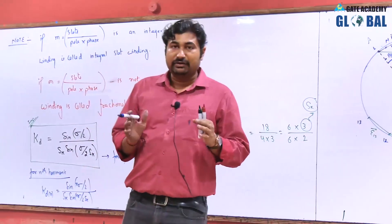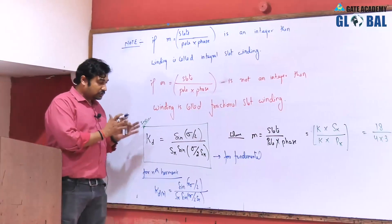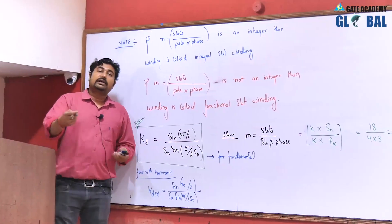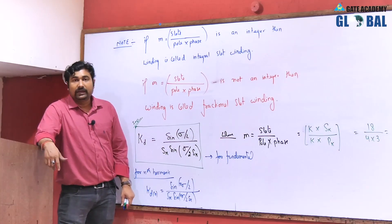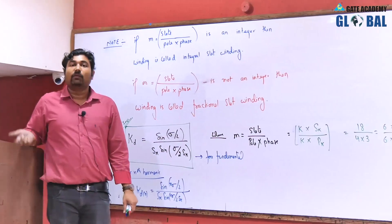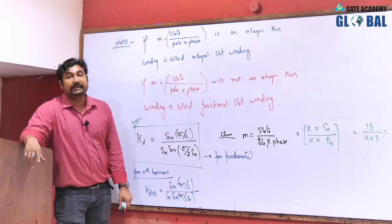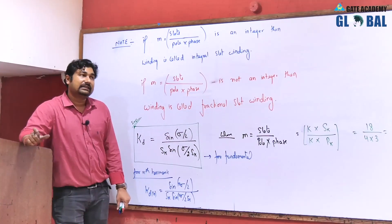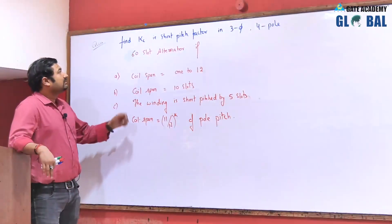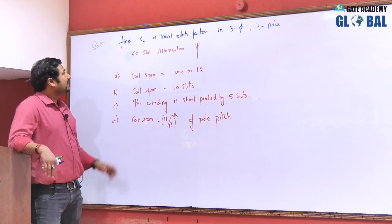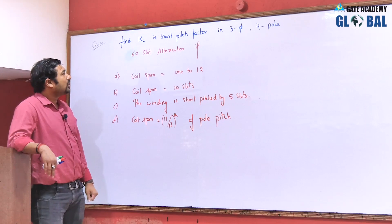I am hoping the entire concept has been delivered clearly and now you will be able to solve the questions. We will discuss some numericals to become more comfortable on this topic, and then we will proceed to space harmonics, why the stator is connected in star and not delta, and the advantages and disadvantages of short pitching and distribution factor. Let us see one numerical: find K_c, that is the short pitch factor, in a 3-phase, 4-pole, 60-slot alternator.